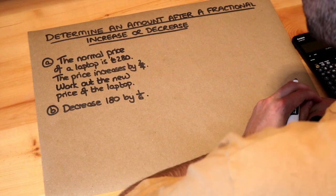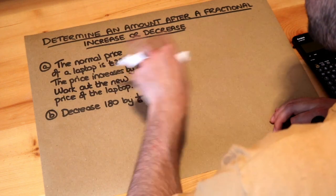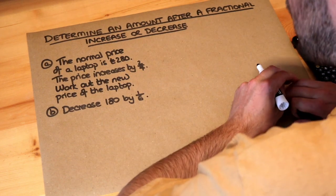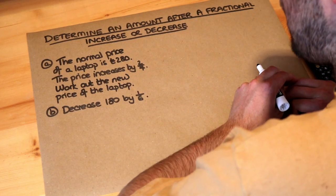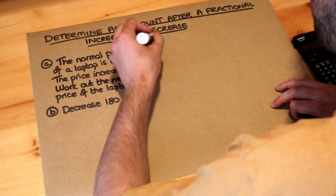Hello and welcome to this Dr Frost video on determining an amount after a fractional increase or decrease. Let's read the first question. The normal price for a laptop is £280. The price increases by two-sevenths. Work out the new price of the laptop.